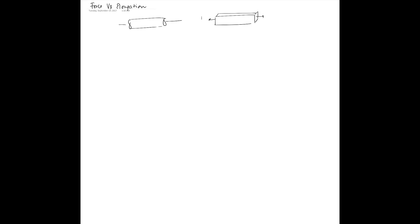In an earlier video we saw that if you have a specimen — drawn as a cylindrical rod, but it could also be a rectangular cross-section rod — with a tensile load applied at two ends, the only thing that changes in the definition of sigma is how you compute the cross-sectional area A. In this case the cross-sectional area is the face normal to the applied force F. If this dimension is L and this dimension is W, then the cross-sectional area equals L times W. If you apply the same force perpendicular to a different face, you get a different normal stress.